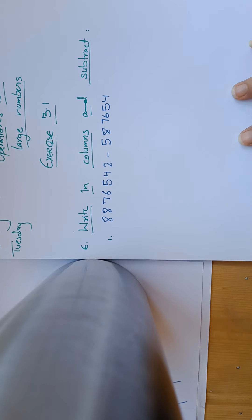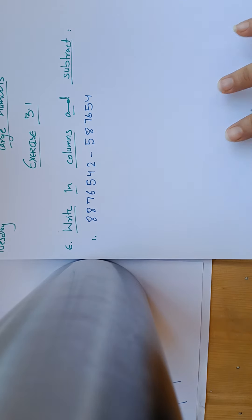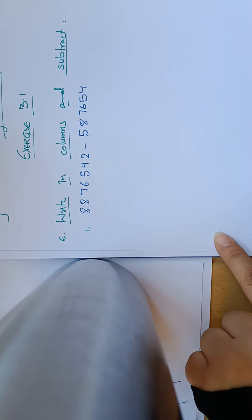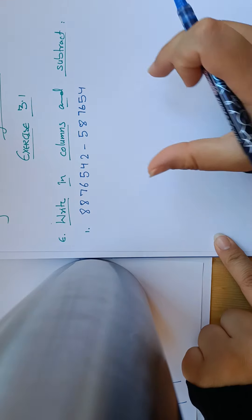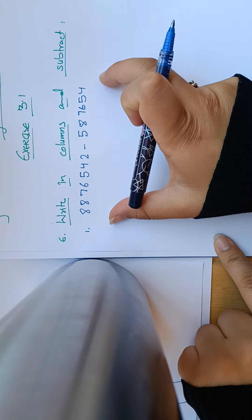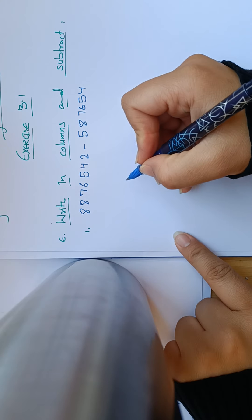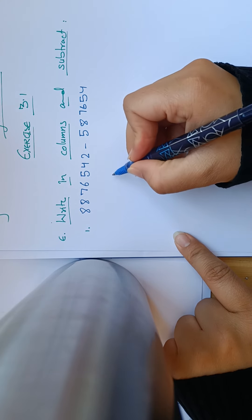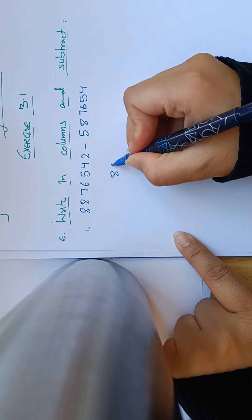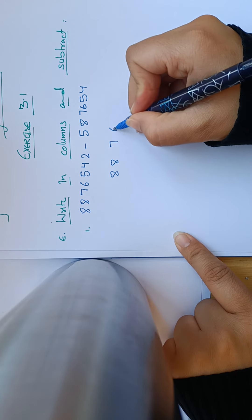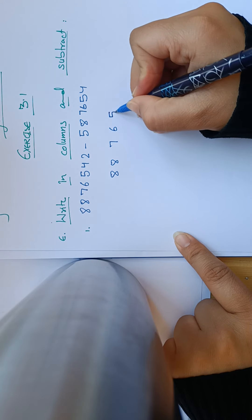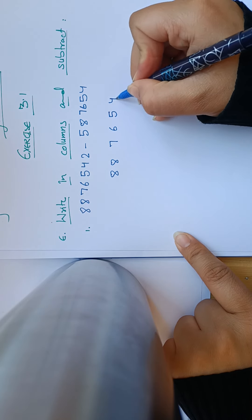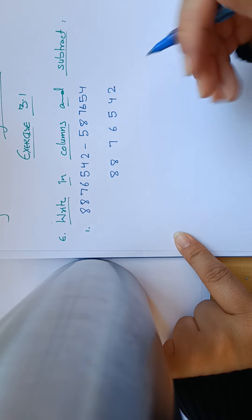Write in columns and subtract. We need to write the numbers in columns and subtract them. We have the number 8,876,542. We need to write this number with its place values.